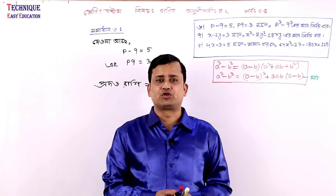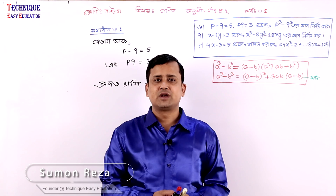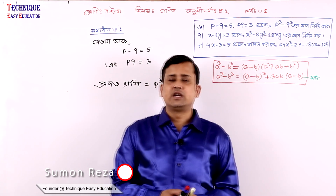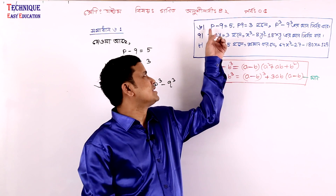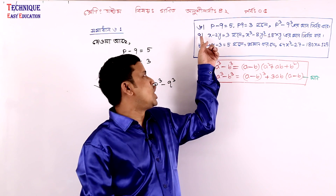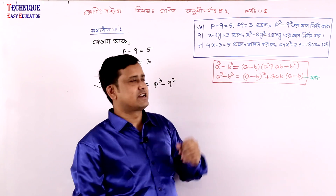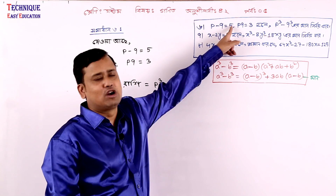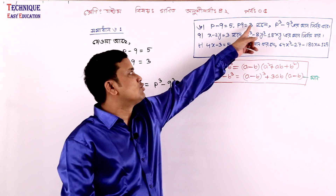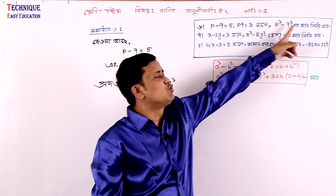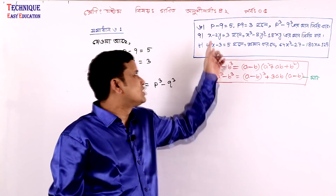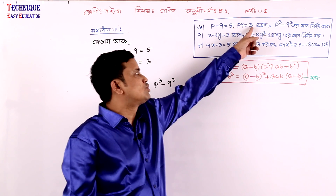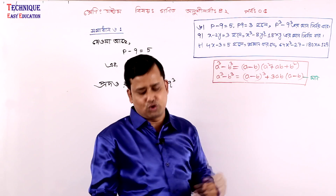Technique Easy Education. Q3R99 - do you just read it? P minus Q is equal to 5, PQ is equal to 3. PQ minus Q3R99 - do you? So the first thing is P minus Q is equal to 5, then PQ is equal to 3.